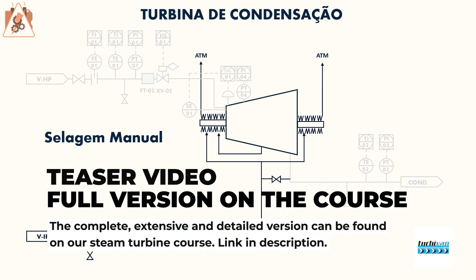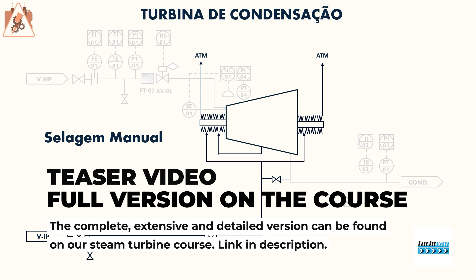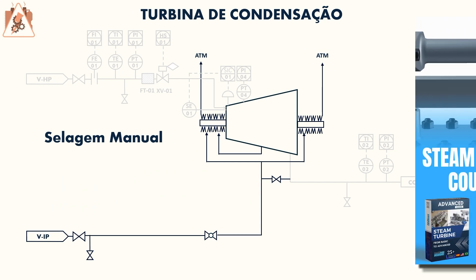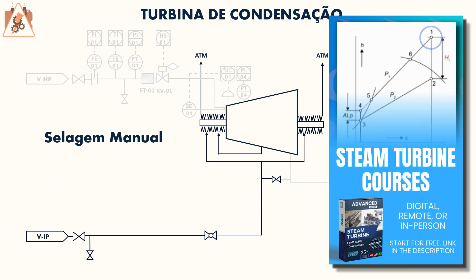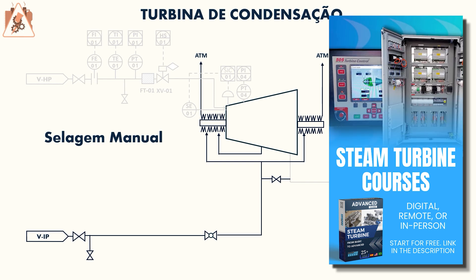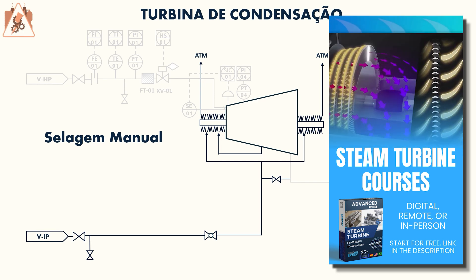Let's now take a look at some sealing models for machines. For condensing or total condensing turbines — not necessarily total condensation; extraction and condensation turbines can also follow this type of sealing. The first sealing we have is called manual sealing.